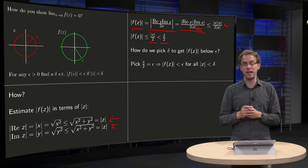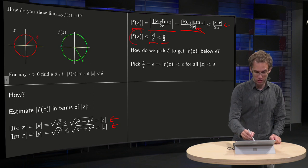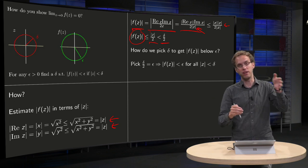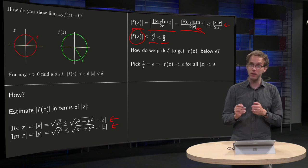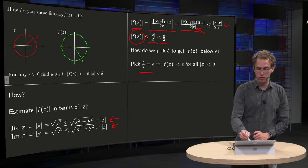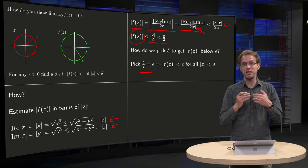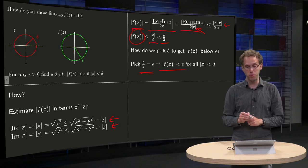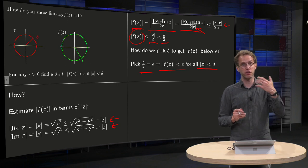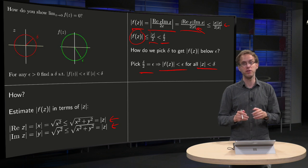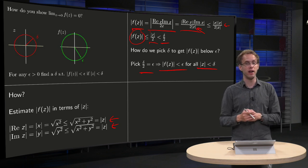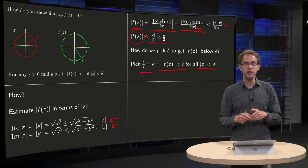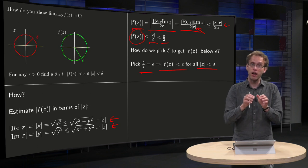We want to pick our delta in a smart way so that delta over 2 is always smaller than epsilon. We should pick delta equals 2 times epsilon. With this choice, the norm of f of z is always smaller than epsilon whenever the norm of z is smaller than delta. For example, if someone gives you epsilon equal to 0.1 you pick delta equal to 0.2, or if epsilon equals 0.001 you pick delta equals 0.002, and all function values stay within the epsilon range.